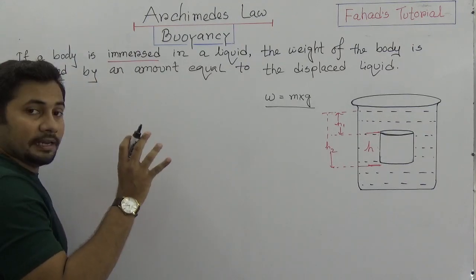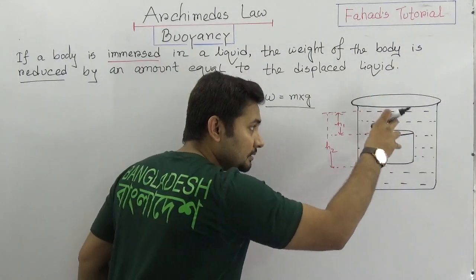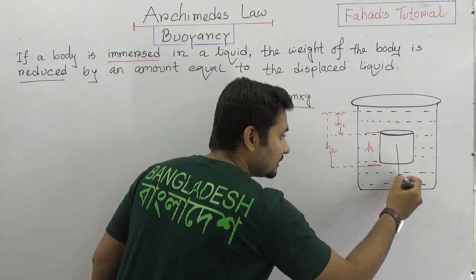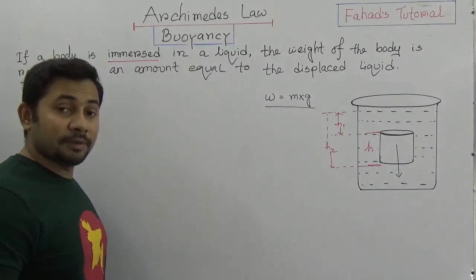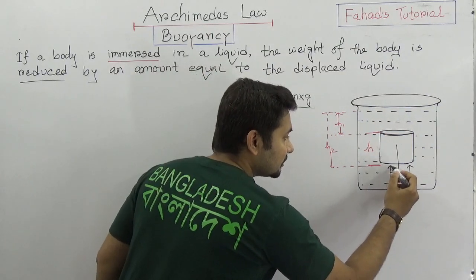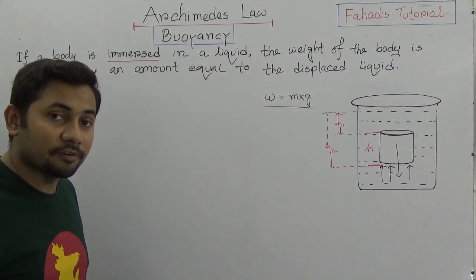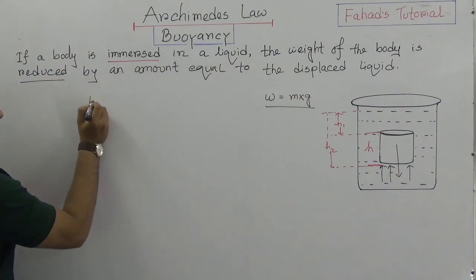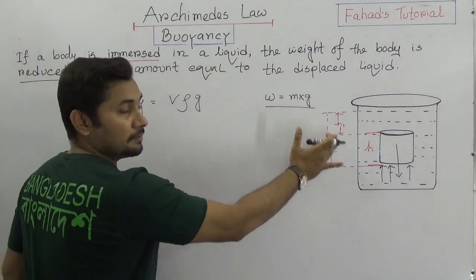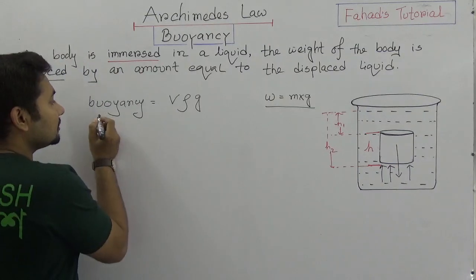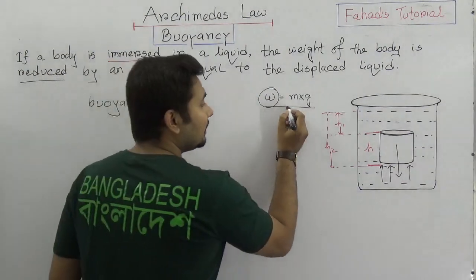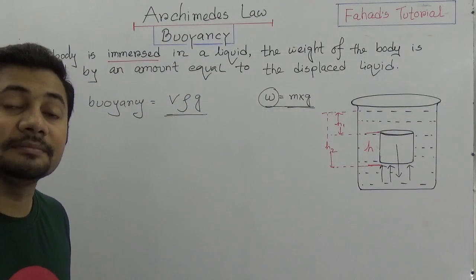Now you think that if it is immersed totally into the water, then what is the weight? Where is the weight working? We already know that this weight will be working downwards, and weight is a vector quantity that always works towards downwards. And now there will be some force working upwards, and this upward force is called buoyancy. Buoyancy is equal to V rho g.